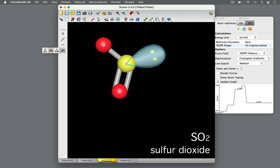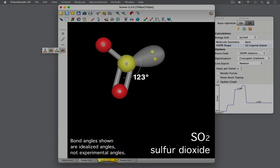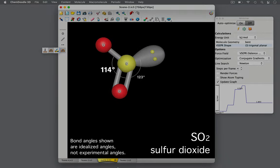Therefore, the angle between the lone pair and an oxygen atom is greater than 120 degrees. In turn, the bond angle between the two oxygen atoms is less than 120 degrees.